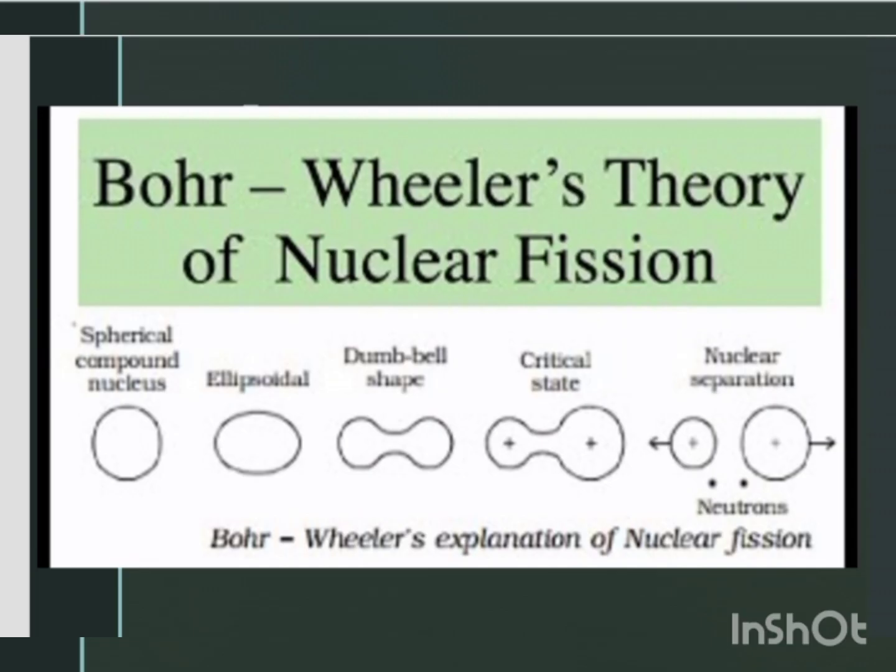This image shows the Bohr-Wheeler explanation of nuclear fission. A liquid drop has a spherical shape due to surface tension. On applying external force, the sphere changes into an ellipsoid, which may change into a dumbbell shape when the force is larger. This may break at the narrow end into two portions.